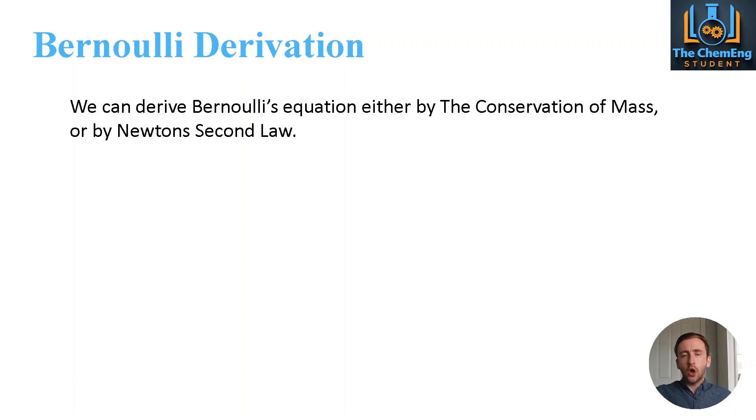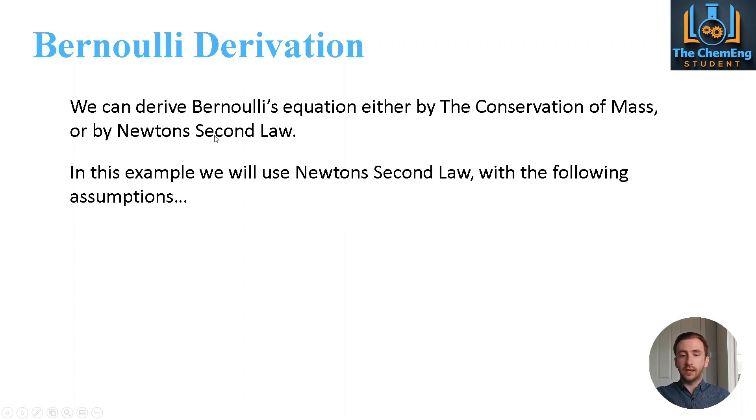Now while it's kind of outwith the scope for us as engineers in terms of the derivation of Bernoulli's equation, it's a good idea to see in a general sense how it's derived because that will give us a more and better appreciation for the variables involved. Now we can either model Bernoulli's equation by conservation of mass or by Newton's second law. And the one that we're going to go for is Newton's second law which states that the summation of the forces is equal to the mass of the material multiplied by A.